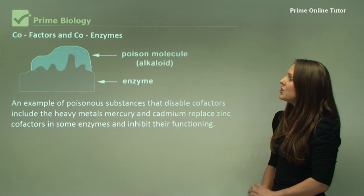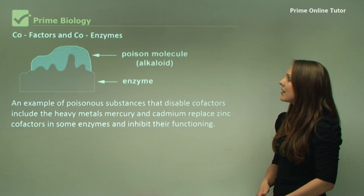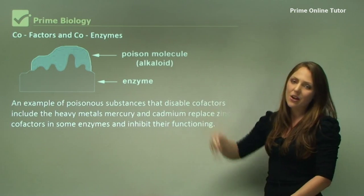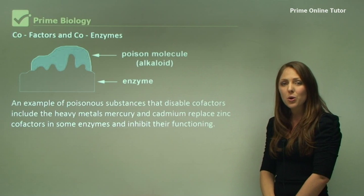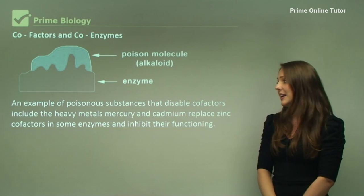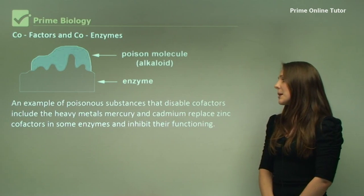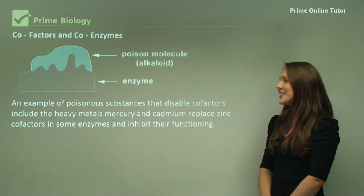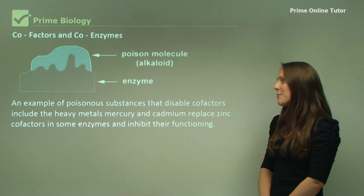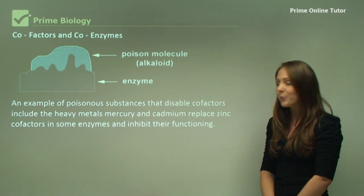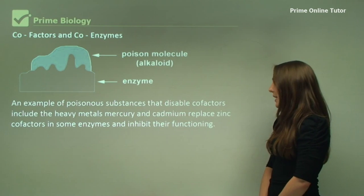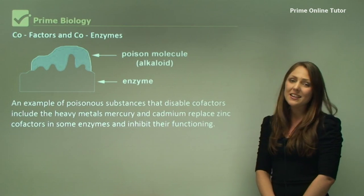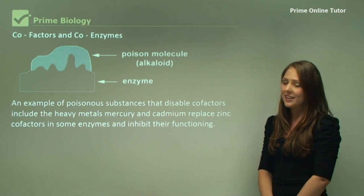You can see here there's a poison molecule attached to the enzyme where the cofactor should be. An example of poisonous substances that disable cofactors includes the heavy metals mercury and cadmium, which replace zinc cofactors in some enzymes and inhibit their functioning.